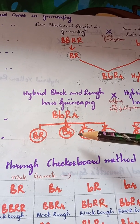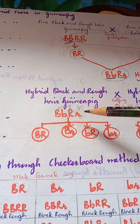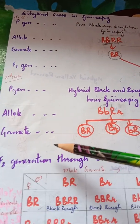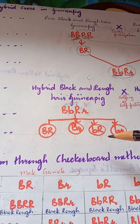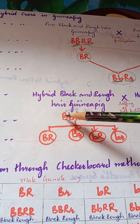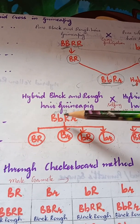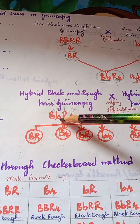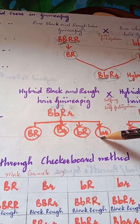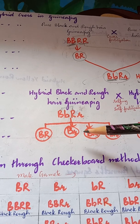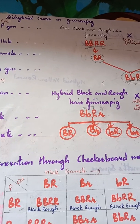From this we can understand that these factors — black, white, rough, smooth — do not mix with each other. At the time of gamete formation, these factors segregate independently. The black factor can combine with capital R (rough) or small r (smooth), and similarly the white factor can combine with rough or smooth. From this we can deduce Mendel's second law — the Law of Independent Assortment — deduced from the dihybrid cross.